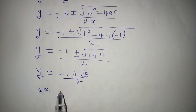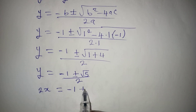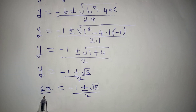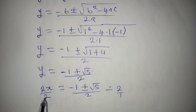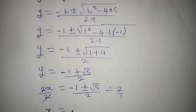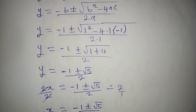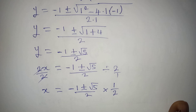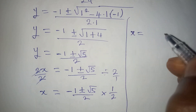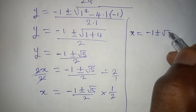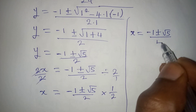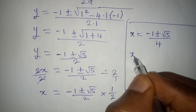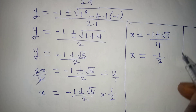Since y equals 2x, we have 2x equals minus 1 plus or minus the square root of 5, over 2. Dividing both sides by 2, x equals minus 1 plus or minus the square root of 5, over 4. So the complete solutions to the equation are x equals minus one half, and x equals minus 1 plus or minus the square root of 5, over 4. Thank you for watching.